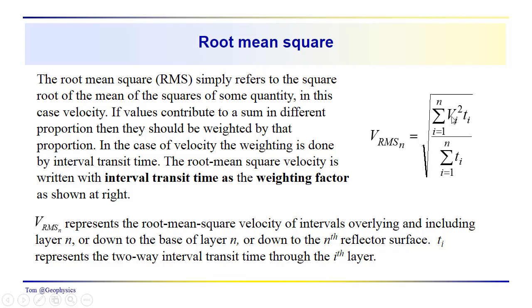So we have the interval velocity squared, and you'll notice that rather than just divide by the total number, we're multiplying them by t_i. The t_i, in this case, are the interval transit times, the two-way interval transit time through each of the n layers in the subsurface, down to the layer of interest here, VRMS_n.